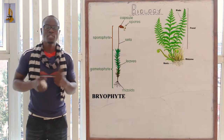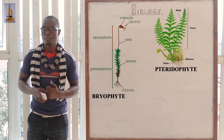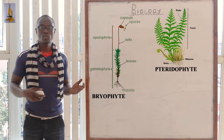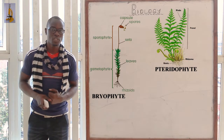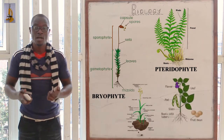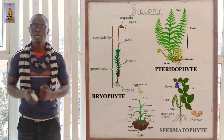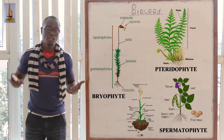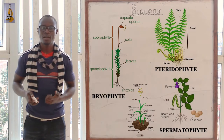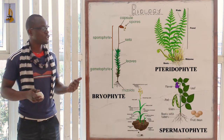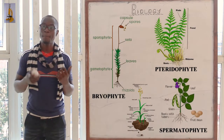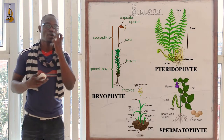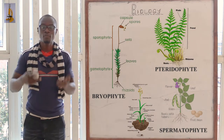We also have division Pteridophyta, which mainly comprises of the ferns. And finally we have division Spermatophyta, which mainly comprises of all the seed-bearing plants. We are going to look at the divisions in kingdom Plantae in more detail in Form 3.